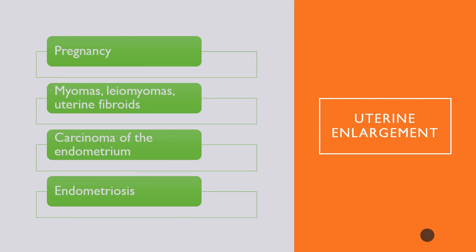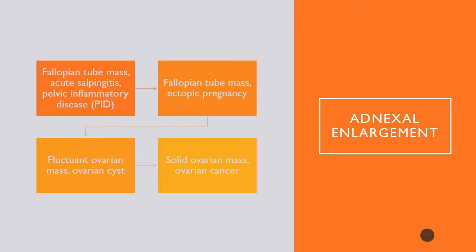The uterus can become enlarged during pregnancy or due to fibroids, myomas, lesions, endometrial cancer, or endometriosis. Adnexal enlargement is assessed via bimanual exam—one hand in the vagina and one pressing on the external surface of the abdomen—feeling for the ovaries and tubes. Findings of concern include masses in the tubes, inflammation of the tubes, pelvic inflammatory disease, ectopic pregnancies, ovarian cysts, and ovarian cancer.